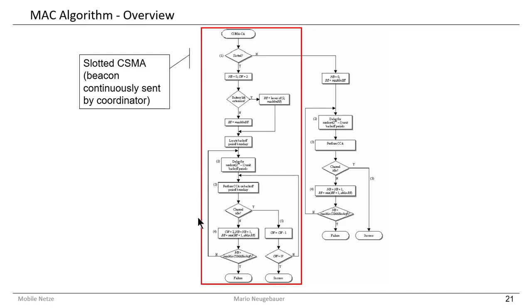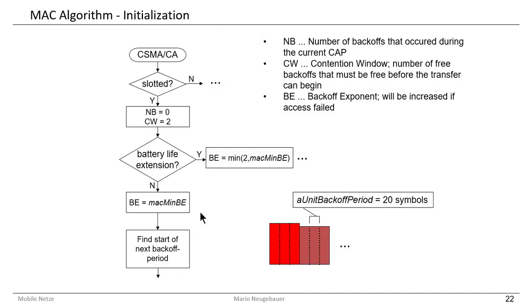In the following slides I will explain the algorithm for the contention access in more detail. The algorithm starts and we first decide if it is slotted or not, depending on the beacon package. Then we set some parameters: we initialize NB to 0 — the number of backoffs that have occurred already during this contention access period — so we start fresh with 0 backoffs.